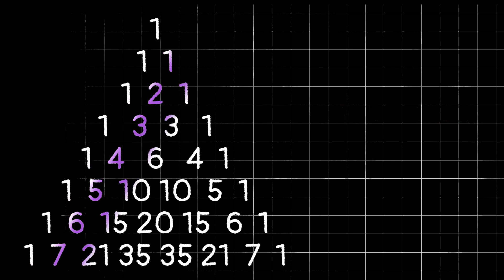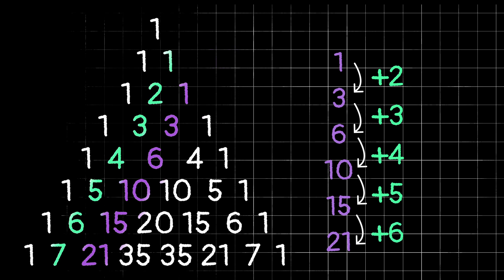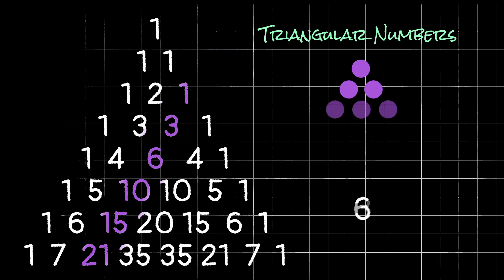Moving down to the next diagonal after that, we have one, three, six, ten, fifteen — that may or may not sound familiar depending on your math background. To go from one to three, we add two. To go from three to six, we add three. To go from six to ten, we add four. This makes sense because if the diagonal above was the natural numbers, then we're going to end up adding those natural numbers to get this row. These numbers actually have a name — they're called triangular numbers. If we represent these numbers visually, I think you'll see how they got their name.